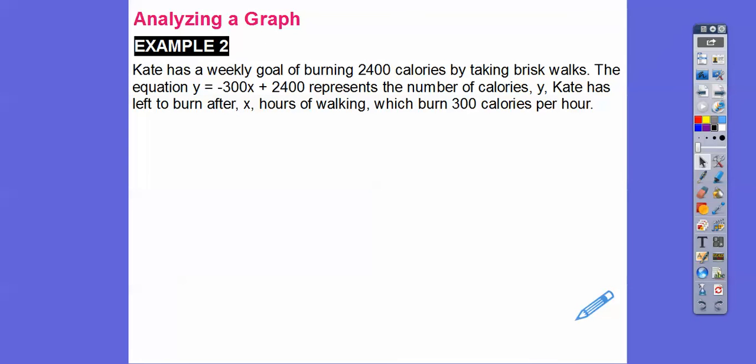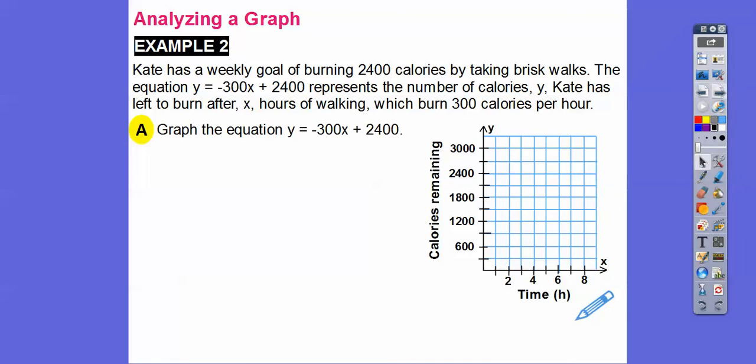So Kate has a weekly goal of burning 2,400 calories by taking brisk walks. So the equation y equals -300x plus 2,400, there's y equals mx plus b, represents the number of calories, which is y, that Kate has left to burn after x hours of walking, which burns 300 calories per hour. That's what this is. That's that burn. So we're losing 300 calories each hour. So they give you a graph right here. Let's go ahead and graph that.